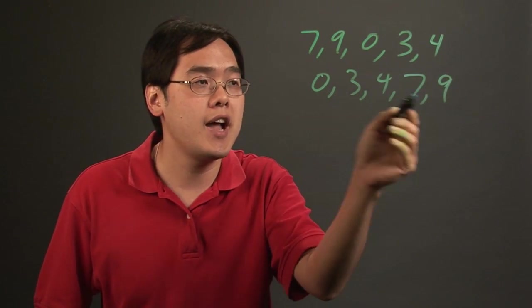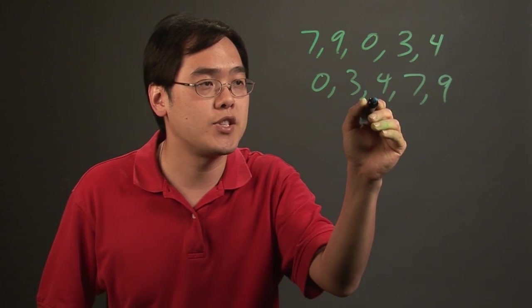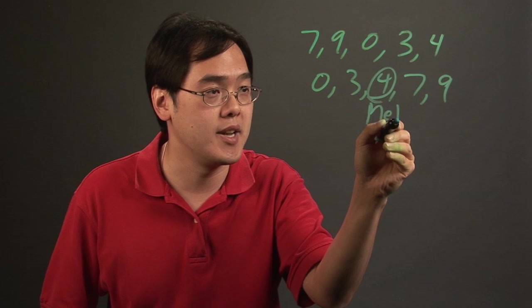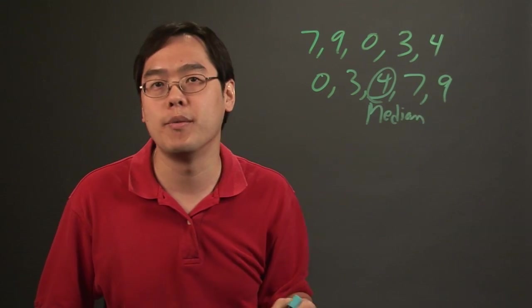Now the median, if you have an odd number of figures, you just pick the one that's directly in the middle. In this case that's the number 4, so that's the median, the number in the middle or the midpoint if you will.